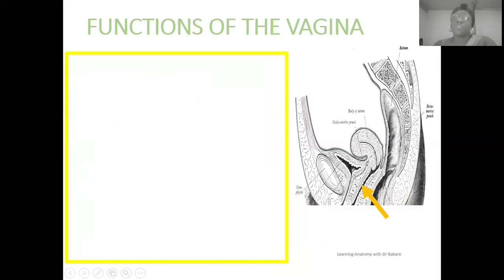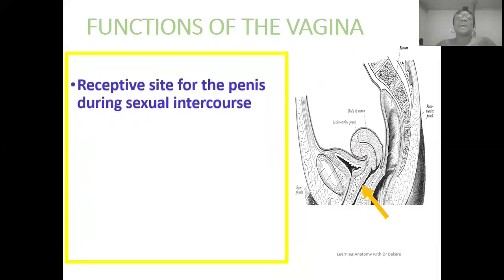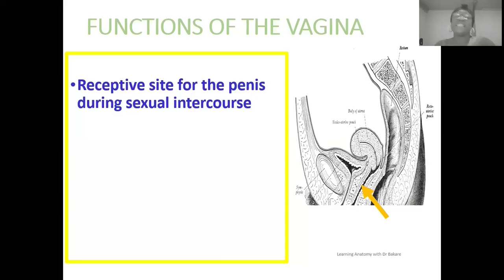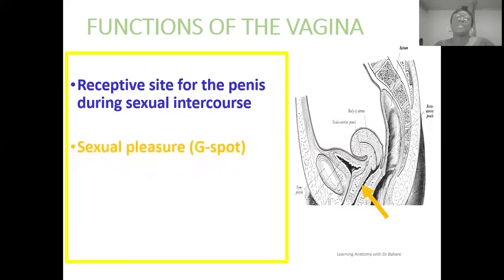Now let's go through the functions of the vagina. The vagina presents a number of functions. The first is that it acts as a receptive site for the penis. The penis does not have any other way to access the female reproductive tract except through the vagina canal, and this is where it releases the ejaculate. This ejaculate then travels to the ampullary region of the uterine tube where fertilization will occur.